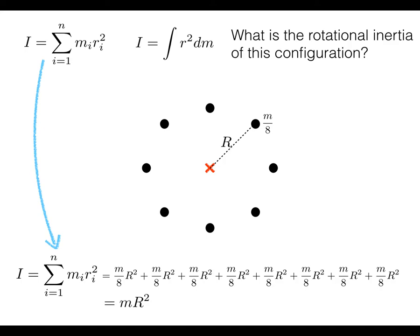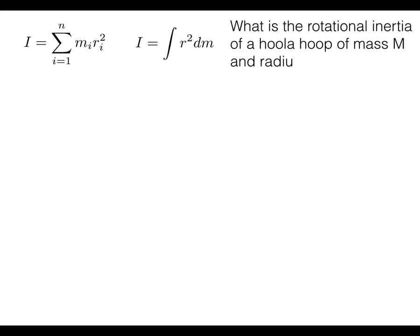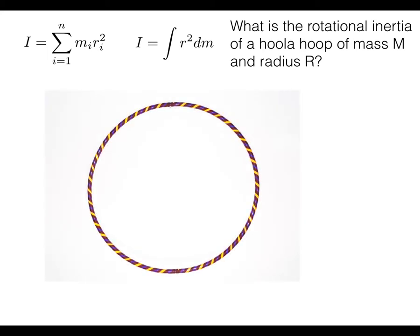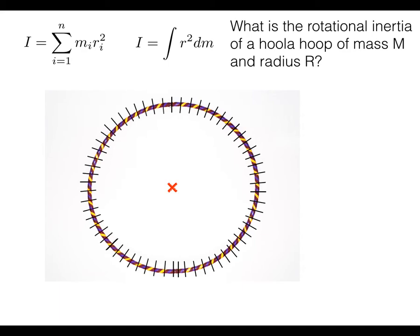What if we ask: what's the rotational inertia of a hula hoop of mass M and radius R, rotated about its center? Based on the last two examples you might already have a guess about the answer, though it is slightly different because now we have a continuous mass — so we want to break it into pieces and use the integral form of the rotational inertia equation.